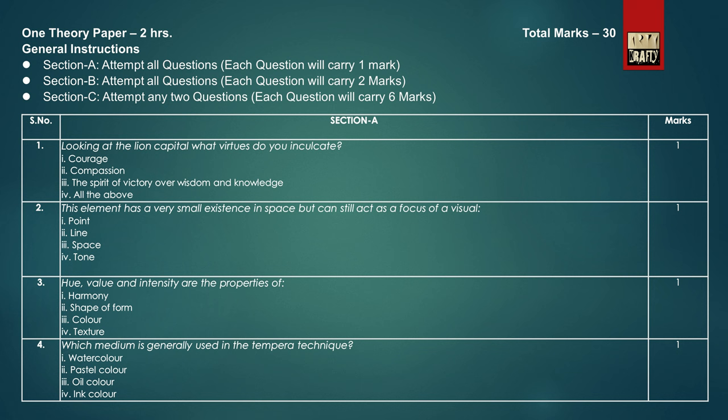Now comes the 8 MCQs. The first question is: looking at the Lion Capital, what virtues do you inculcate? The answer is: all the above. Question 2: this element has a very small existence in space but can still act as a focus of a visual. The answer is: point.